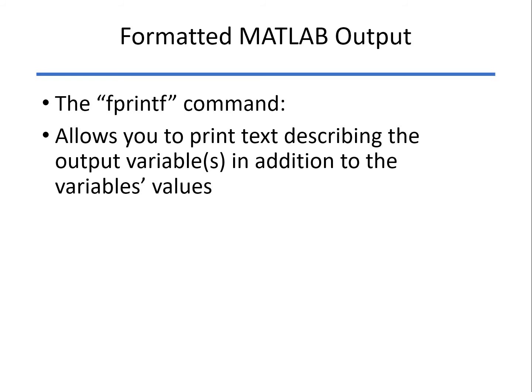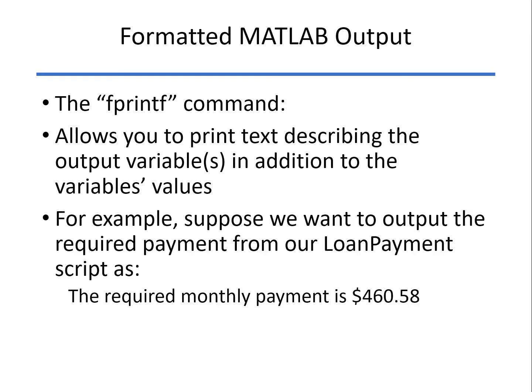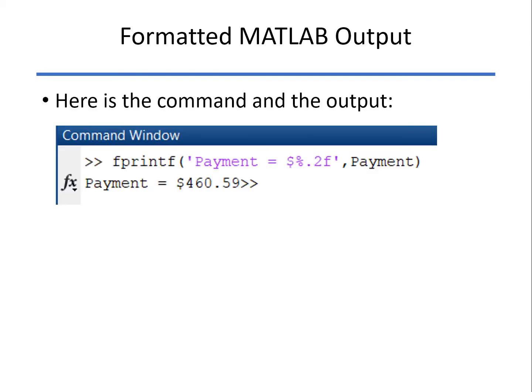It allows you, in addition to putting out the value of the variable, also to print some text describing that, units, etc. So if we want to output, we've calculated the number 460.58 and we want to have this line printed to the screen. Then we would do this with the fprintf command. Again, what's shown in the single quotes is what gets printed to the screen.